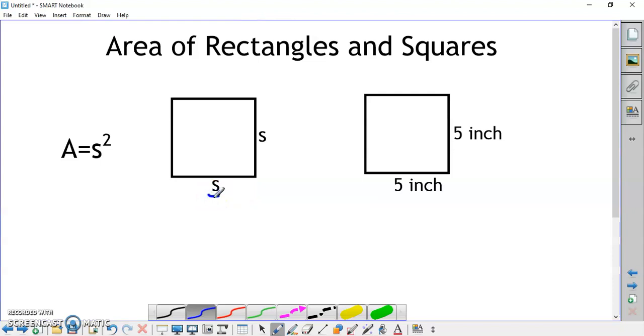The formula for area of a rectangle, A equals LW, becomes A equal to side times side, or A is equal to side squared.